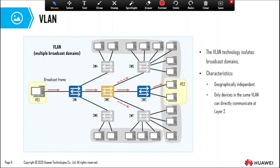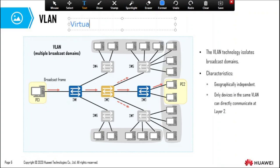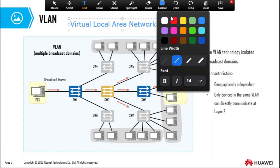We make the assumption that switch1, switch3, and switch7 have the MAC address of PC2, while switch2 and switch5 do not. VLAN stands for Virtual Local Area Network. A VLAN is used to break up a huge broadcast domain into multiple broadcast domains.